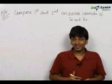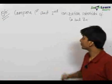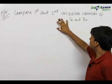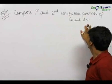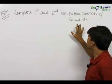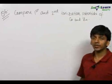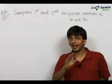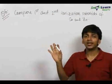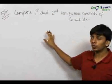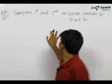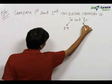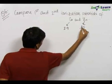Here we have a simple but interesting question. We have to compare the first and second ionization potential of copper and zinc. Whenever you need to compare the ionization potential, write down the electronic configuration of both the elements. We know that the atomic number of copper is 29 and that of zinc is 30.